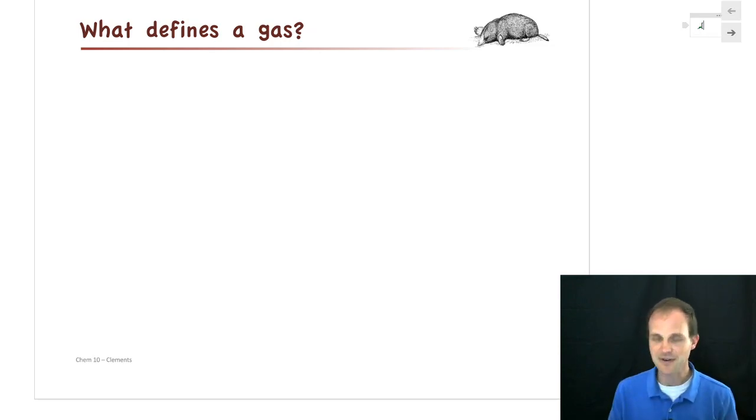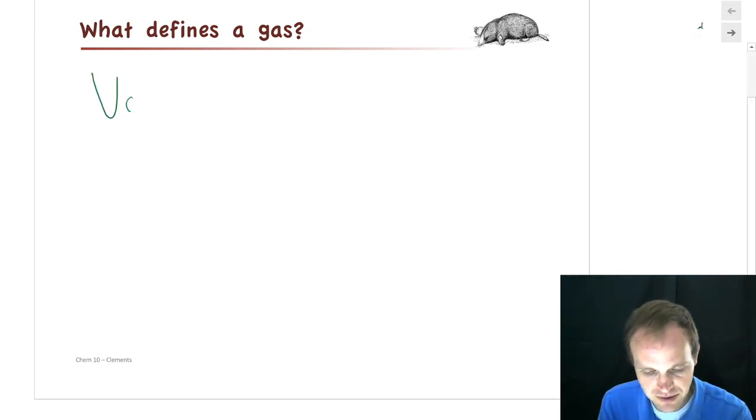So the first thing we have to figure out is what defines a gas. When we think about a gas, what are the different parts of it? Well, if we think about filling up a balloon, one of the first things we think about is how big is the balloon? And so certainly volume is one of the primary variables that define a gas.